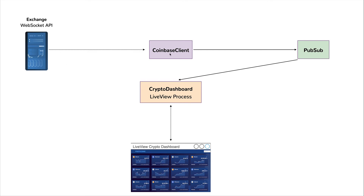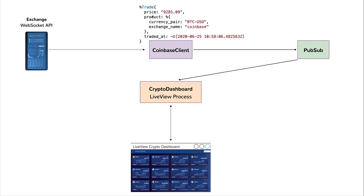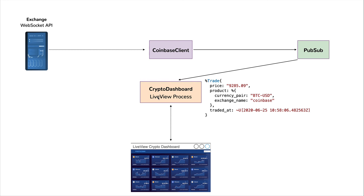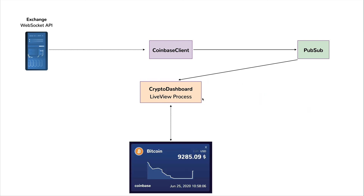Let's see how a trade event coming from an exchange triggers an update on our crypto dashboard. If our Coinbase client is connected to the Coinbase Pro WebSocket API, when it receives a trade event, it maps this trade event to a trade struct, which is then broadcasted using a PubSub server to one or many Live View processes. Then Live View triggers an update on a specific widget, updating the price, the datetime, and the chart.